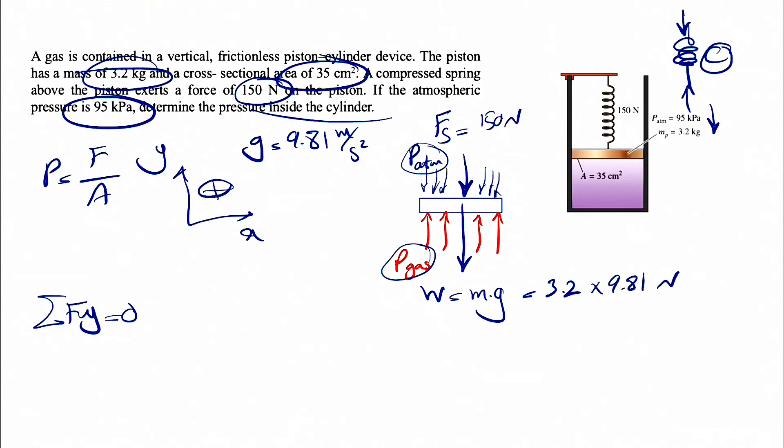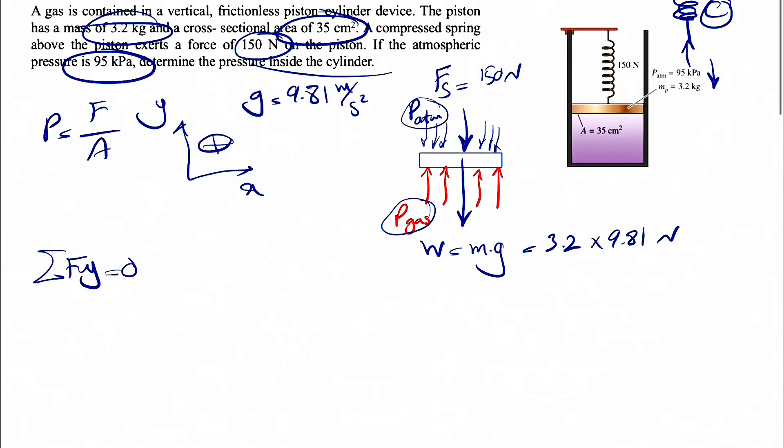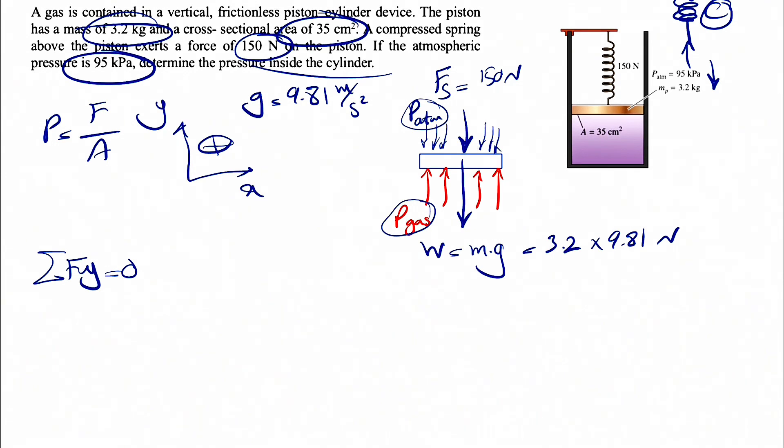So that's part of our assumption. Everything's vertical. And if that's the case, we're going to have all these forces. So we're going to have the pressure of the gas. But as I mentioned, we're going to multiply pressure by the area.